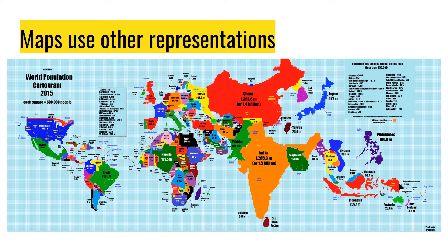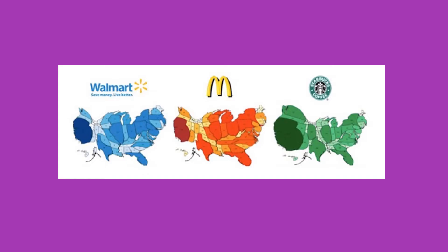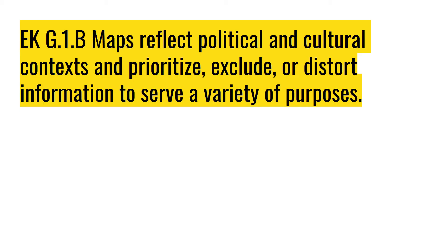Maps also use other different kinds of representations. Looking at this map here, you see it is a world population map, and each of these areas has different colors to represent different numbers in their populations. This is another kind of map that shows you the number of Walmarts, McDonalds, and Starbucks in different places within the United States. Maps reflect political and cultural contexts as well, and they help to prioritize, exclude, and even sometimes distort information to serve a variety of purposes. This is why you always need to be careful about what kinds of maps and representations are being shown to you.